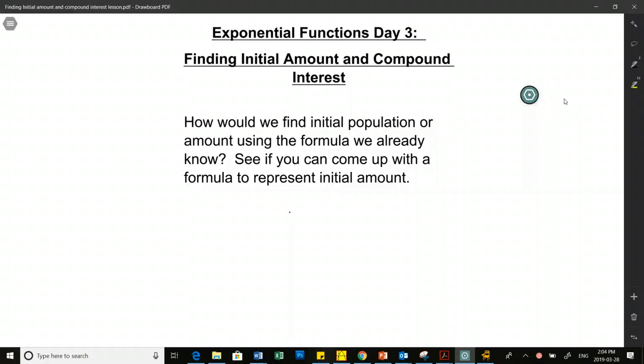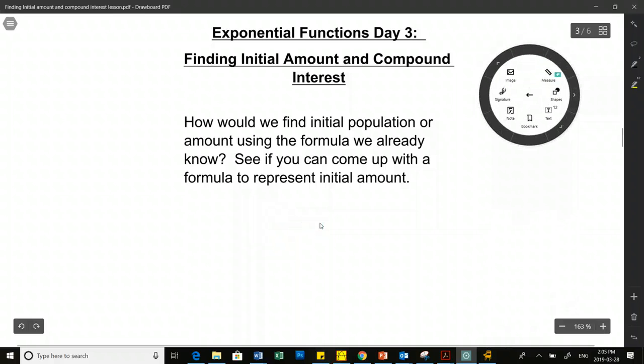I think we're recording now, so that's good. We're going to talk about interest today. We're also going to talk about how we can rearrange our formula to be pre-arranged when we need to find initial value. So using this formula right here, using our formula y equals a times b to the exponent x, I would like you guys to take a quick second here and think about how we can rearrange this formula to be pre-arranged so that when a question is asking for initial value we already have it ready.